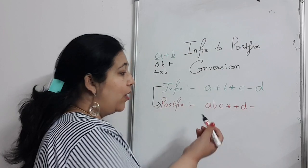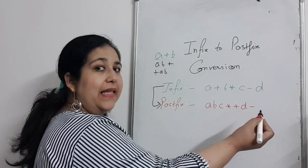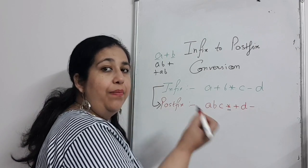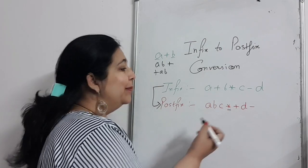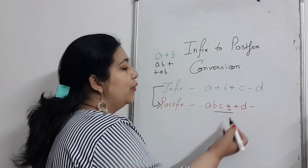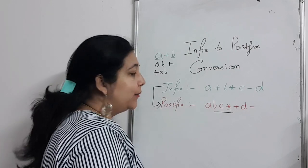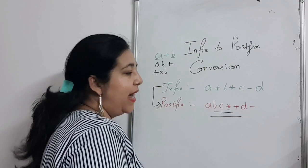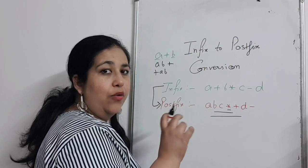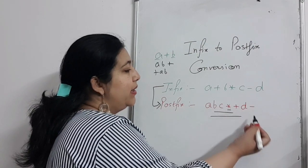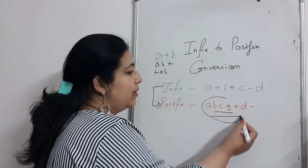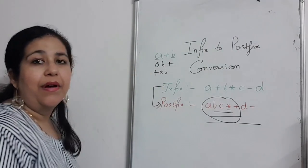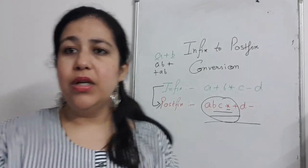This is left to right scan, where the operator works on the last two operands. So here we have multiply, then B and C will multiply. Then A plus, then A and the result of B times C will add. Then minus comes, then the result minus D. So you will have final result.